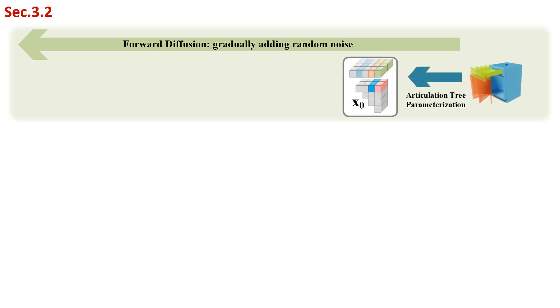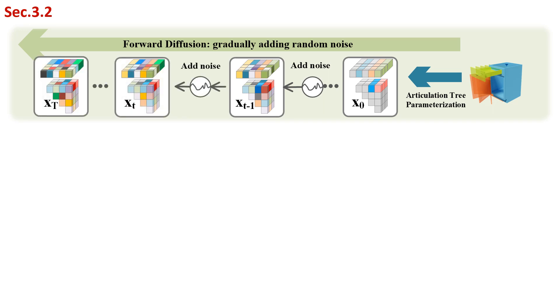We learn a diffusion model on this articulation graph representation to capture the distribution of articulated objects. During forward diffusion, an articulated object model is parameterized to an articulation tree and gradually diffuses to a random graph by iteratively adding noise. During generation, we reverse the diffusion.